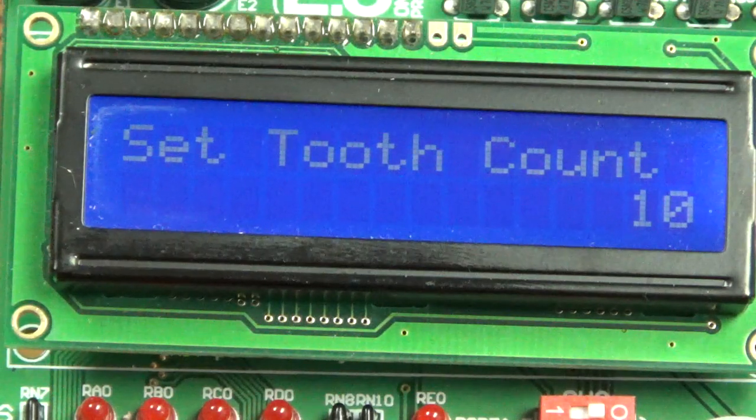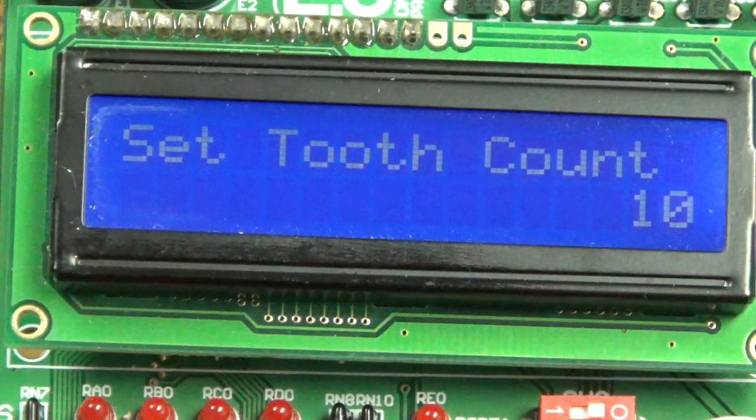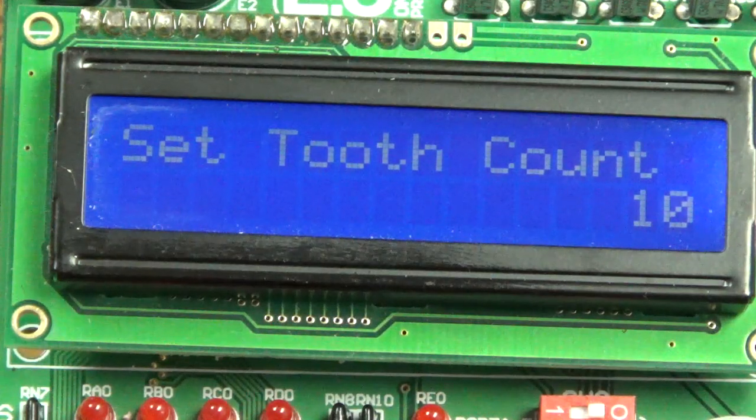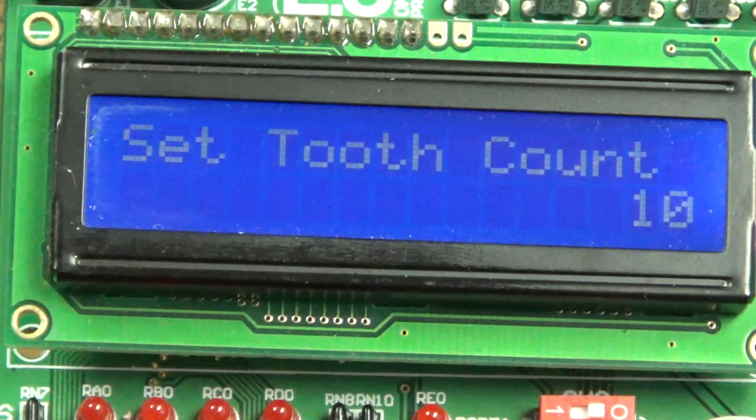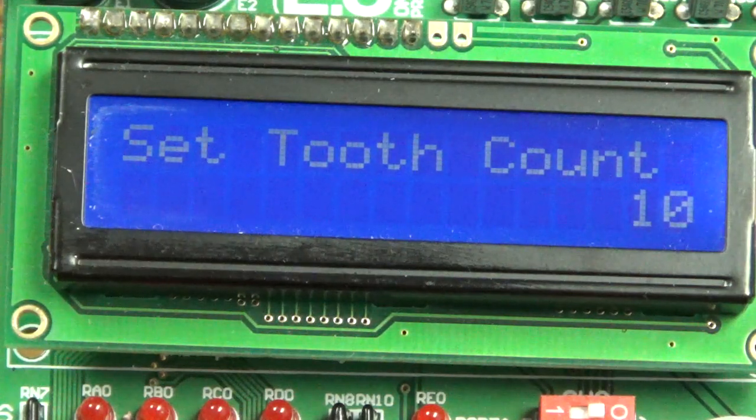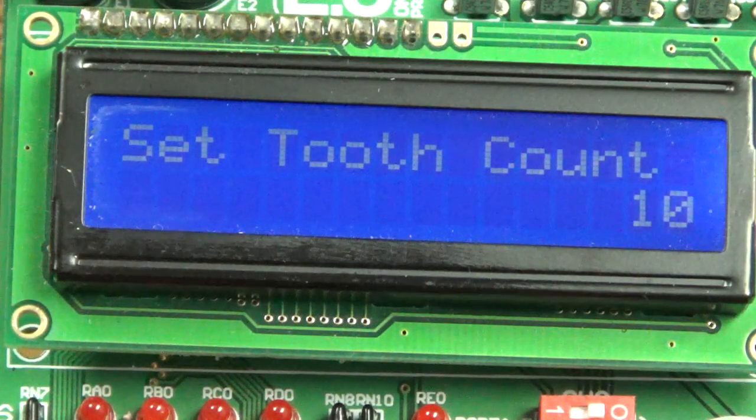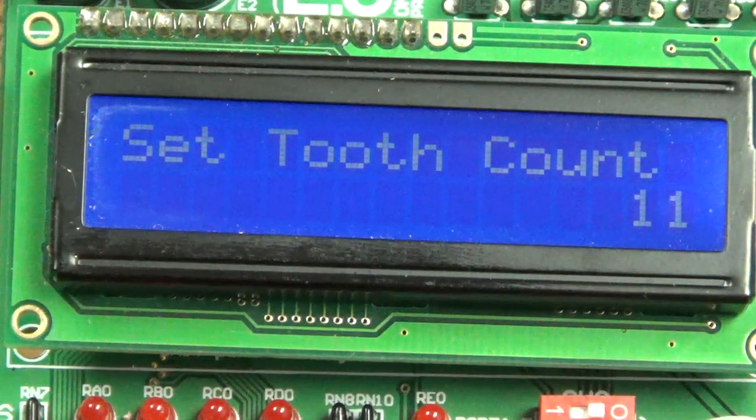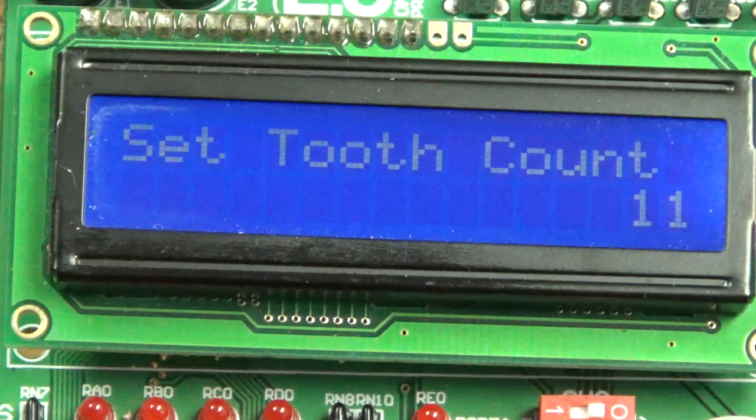There's an up and down button and you can set this—ten would be an inch, twenty would be two inches, fifteen would be an inch and a half. Then push another button and it goes to the next thing, which asks for a tooth count. You can set that up and down to any number you want, up to 255, but I don't think I'll ever make a gear that big. At the moment I got it set for ten teeth. Let's raise that to eleven teeth, which is an odd number.